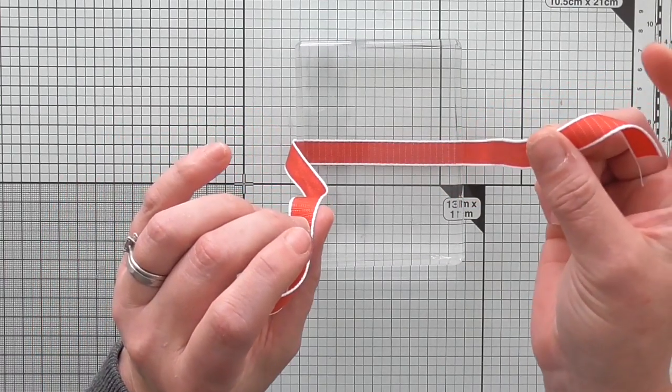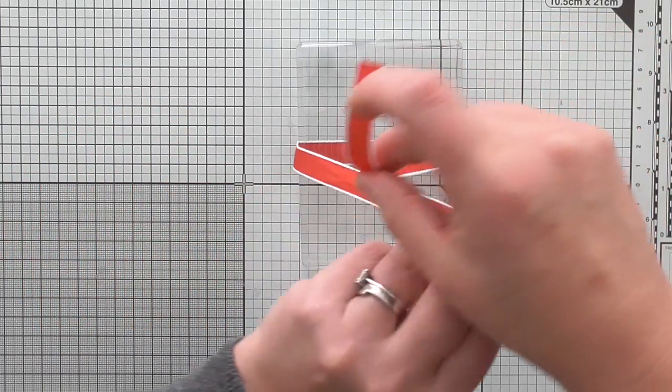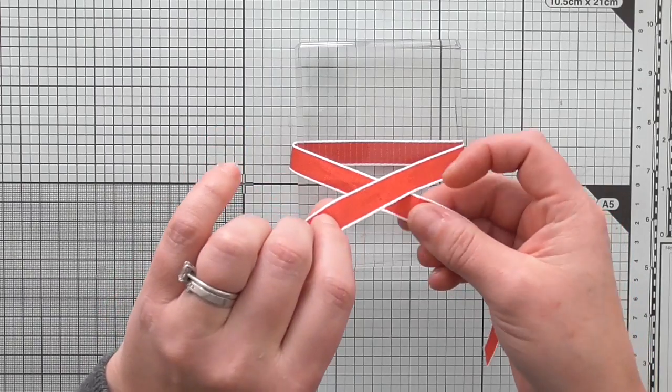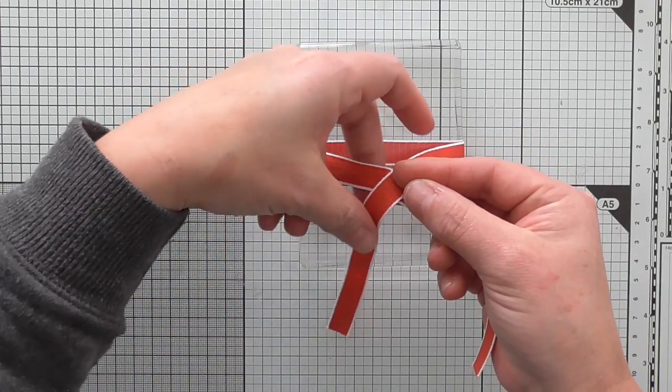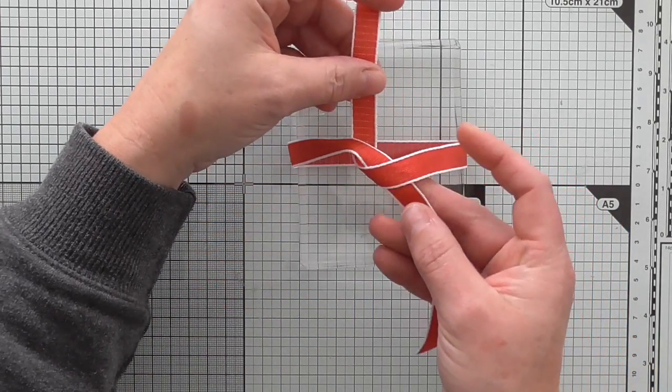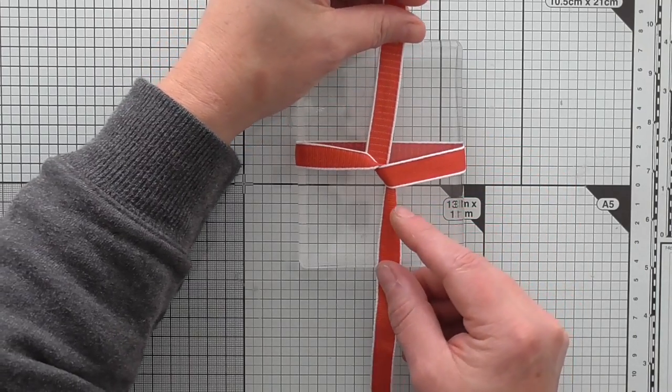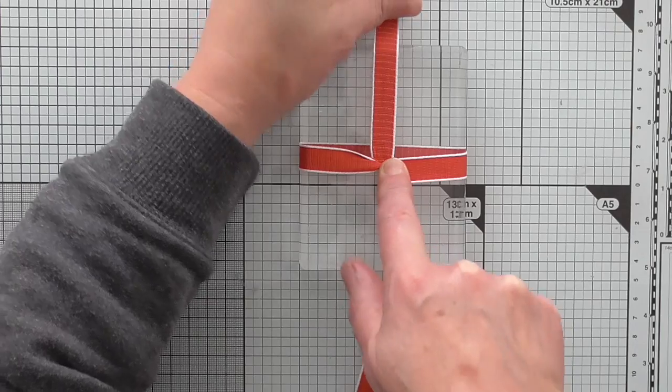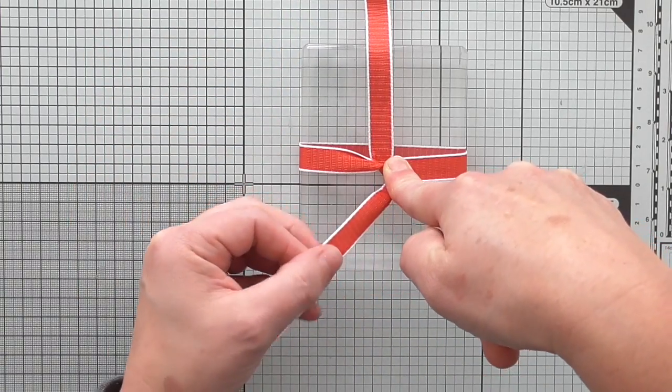And then we are going right over left, so we're crossing like so. That's super easy. And then this one wants to go underneath and up. And then we're just going to pull north to south, nice and tightly. Then I'm just going to put my finger in the middle.